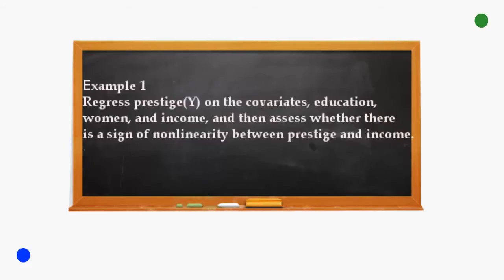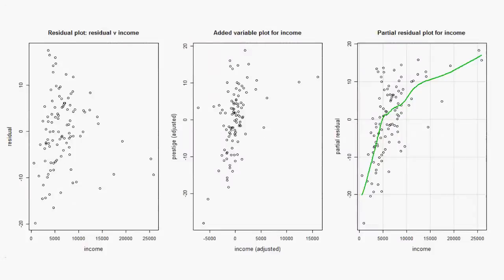Example 1: regress prestige on the covariates education, women, and income, and then assess whether there is a sign of nonlinearity between prestige and income. The left plot is the simple residual plot, the middle is the added variable plot for income, and the right shows the partial residual plot for income. Notice the difference — the simple residual plot does not reveal any nonlinearity issue, but the AV plot and the PR plot do. The curve is easier to spot in the PR plot as it's sharper.